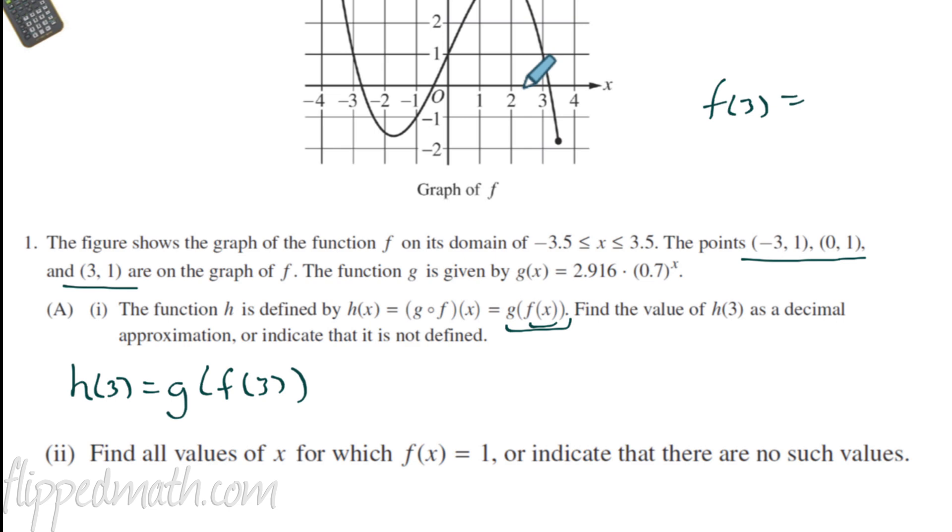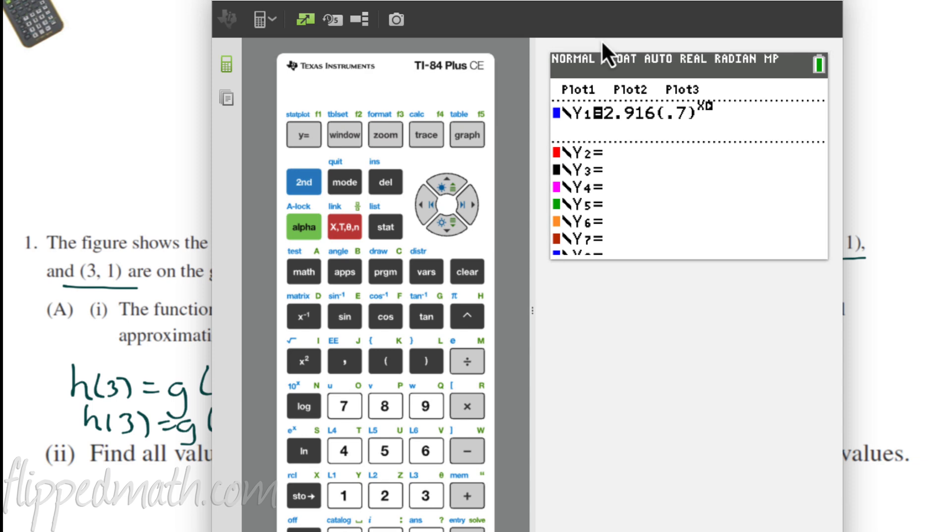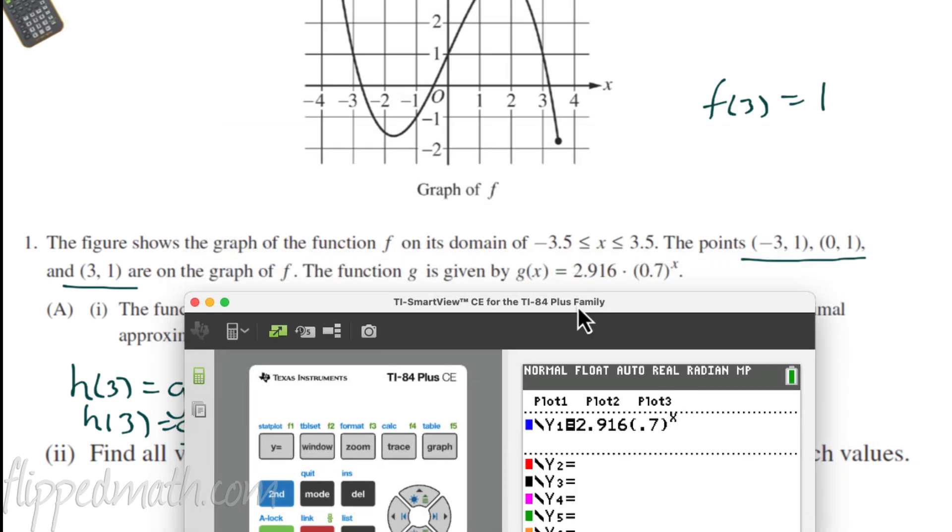So I'm going to say h of 3 is going to equal, and then what do we do? We just plug in a 3 here to the composition of functions. So I'm going to write g of f of 3. And as we do that, now I can find f of 3. Over here to the side, I'm going to say, well, f of 3, what does that equal? f of 3 equals, I go to my graph, this is function f. If I go to 3, it says the output value is 1. So f of 3 is 1. That means that I really need to find g of 1, right?